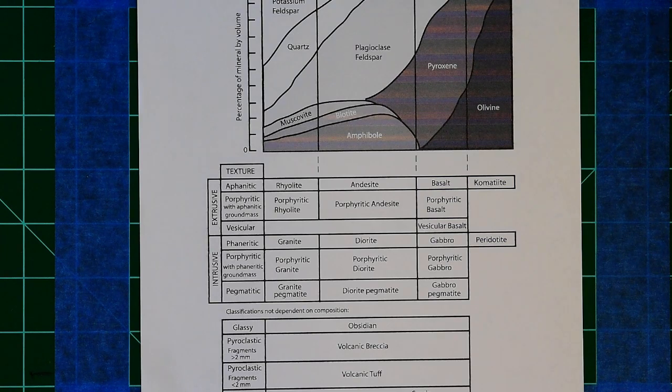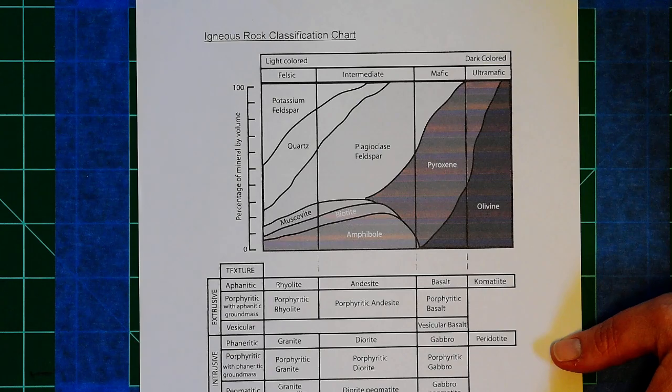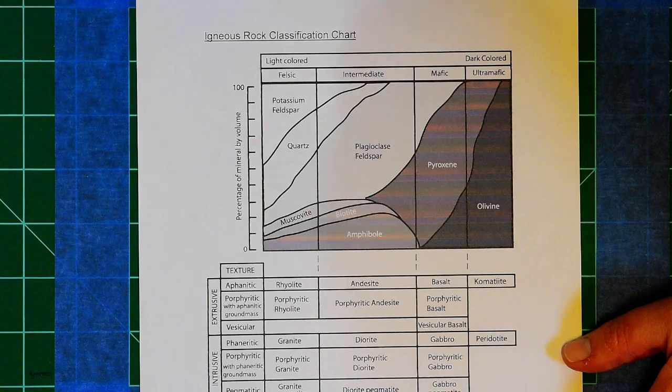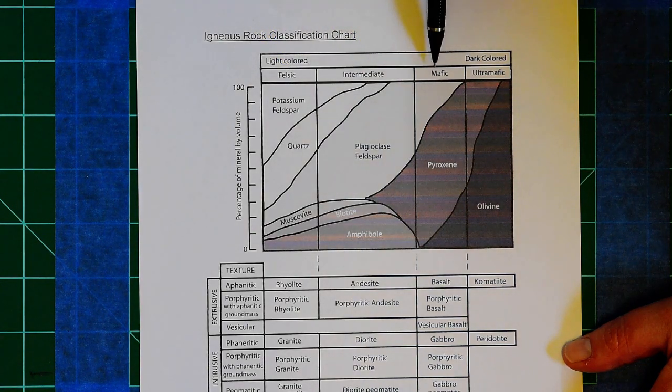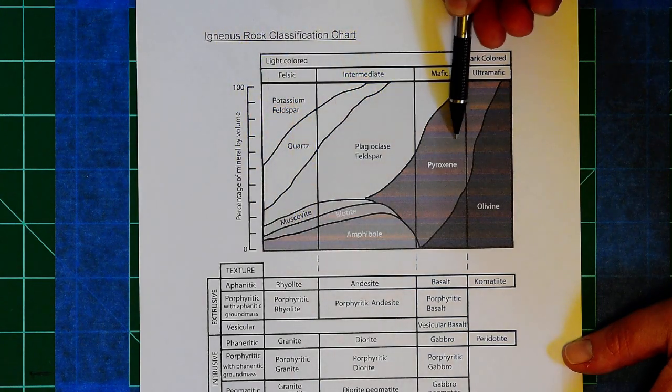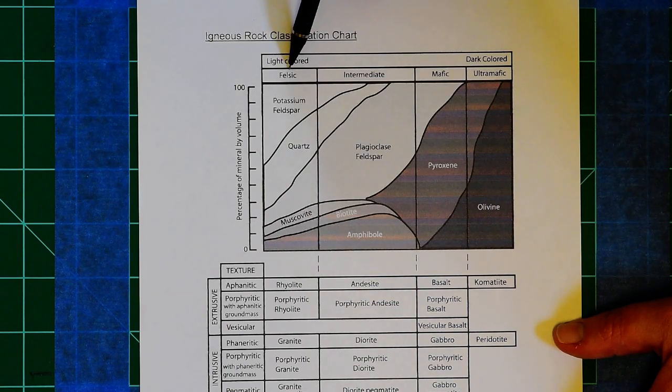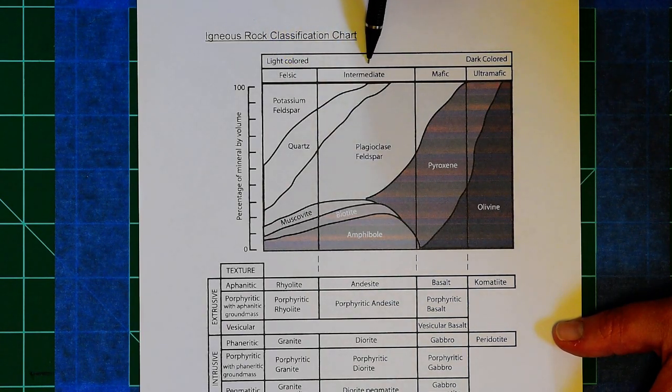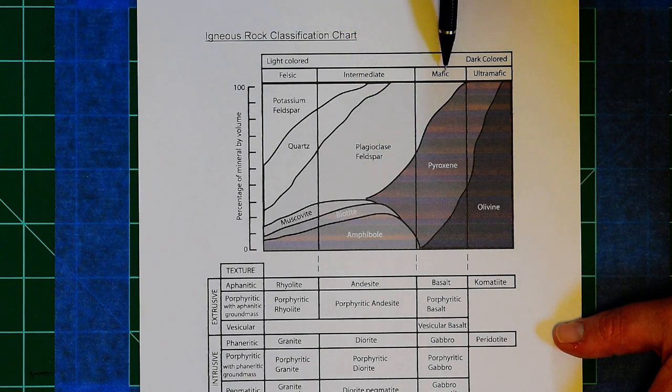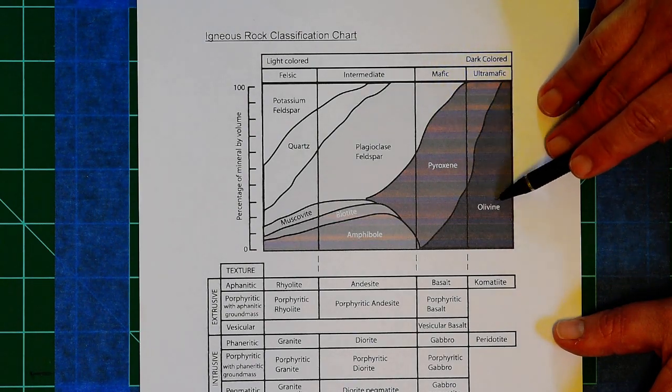This is the chart you will use to help you identify these different igneous rocks. Here we have the composition: felsic, intermediate, mafic, or ultramafic, and this lists the different minerals you would find in those. Remember, felsic is going to be light colored or pinkish, intermediate is going to be a medium gray, mafic is going to be a really dark color or black, and ultramafic is often greenish because it has lots of olivine in it.